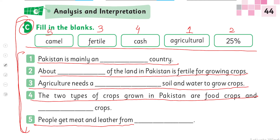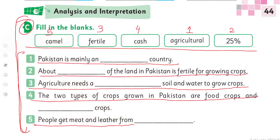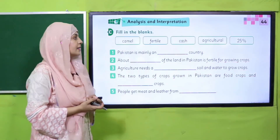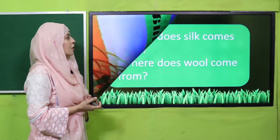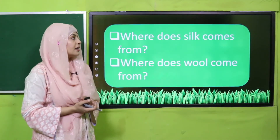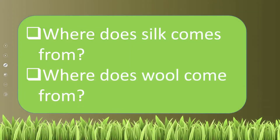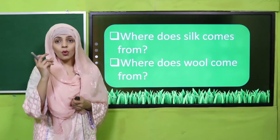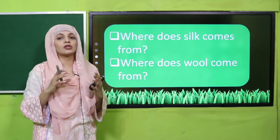So this is how you will complete Analysis and Interpretation — pause the video and quickly finish it. I hope everybody has done it. Now let's quickly move forward towards the evaluation. For evaluation, quickly tell me: where does silk come from?